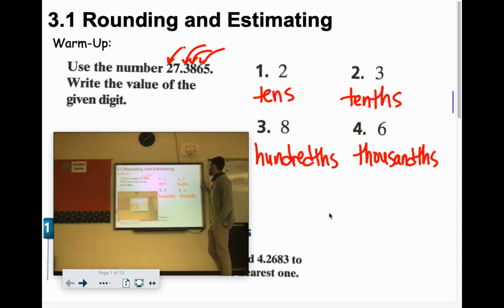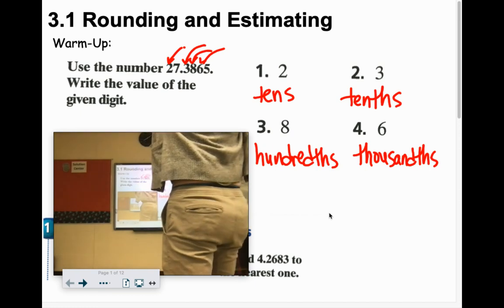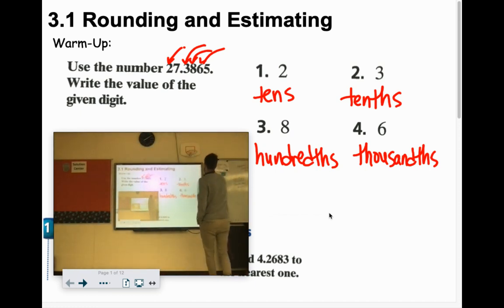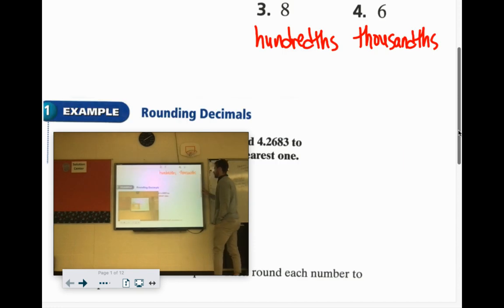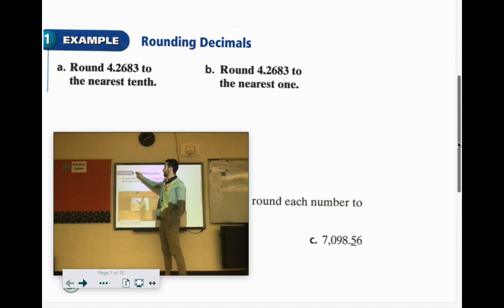So a lot of times with math problems they'll be like, round to the nearest hundredth or thousandth. Round 4.2683 to the nearest tenth. So you have to look, which one is the tenth? It's the spot right after the decimal place. So we're looking at 4.2.